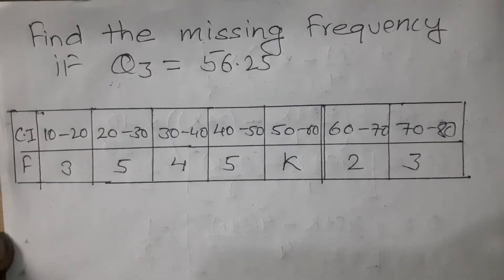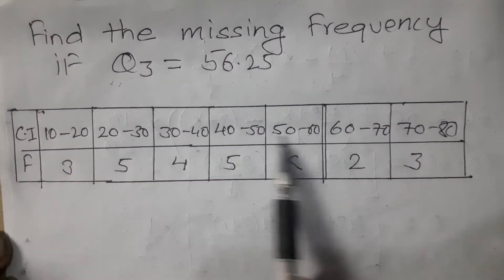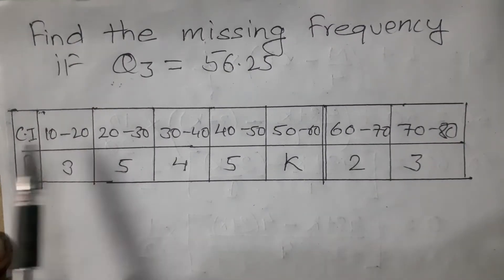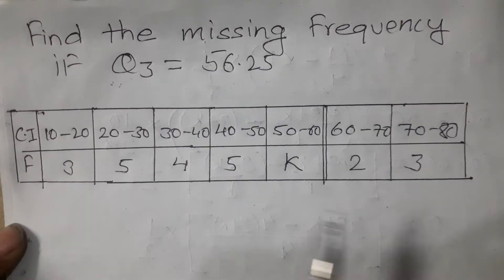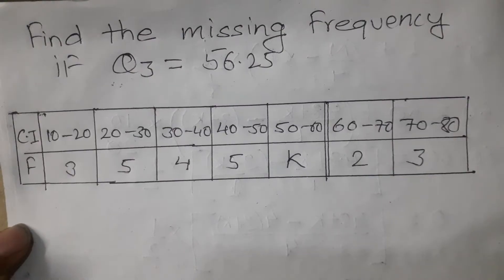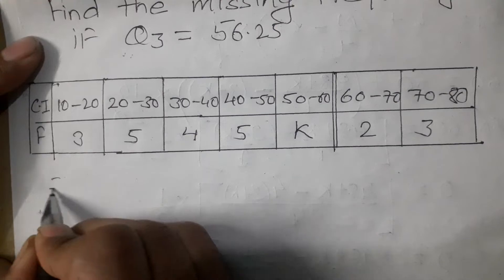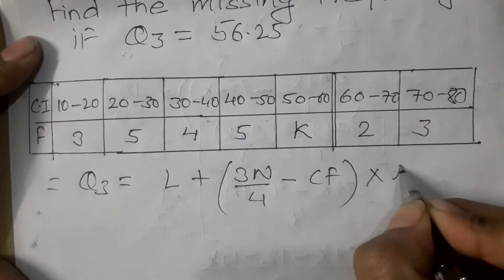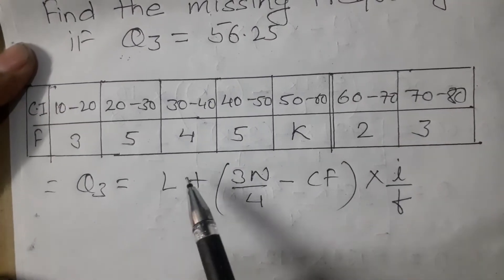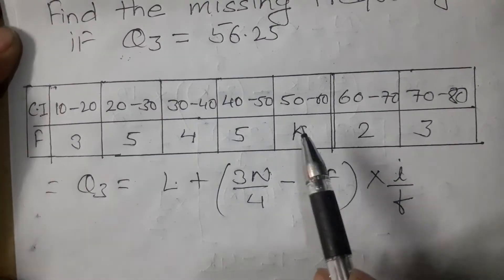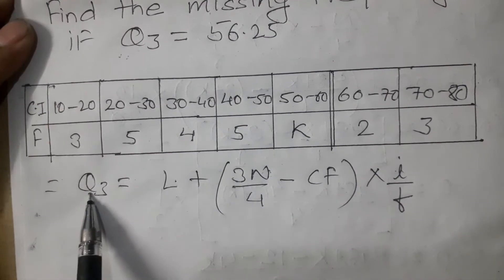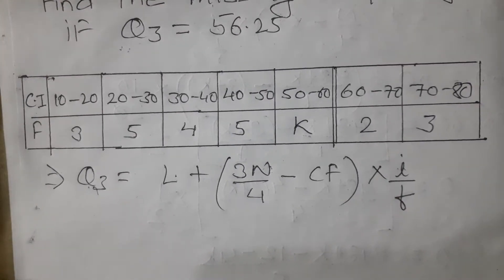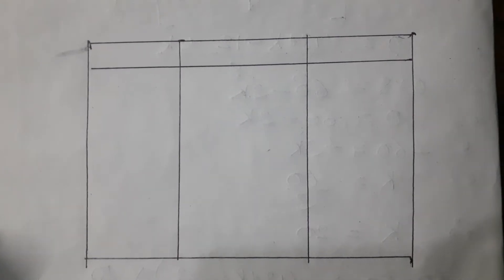We will discuss the question here. First, we arrange the classes in order like 10 to 20, 20 to 30, 30 to 40, and so on. The formula for Q3 is: Q3 equals L plus (3N/4 minus CF) times I divided by F. Here L, N, CF, I, and F are the elements we need to identify.